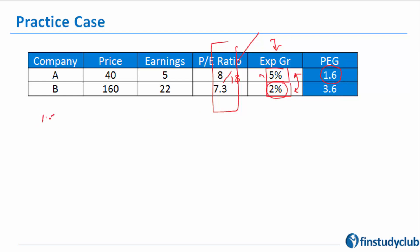7.3 divided by 2 is about 3.6. So how do I read this 1.6? $1.6 of price is justified, or should I say is prevailing, for $1 of earning per one unit of growth percentage.